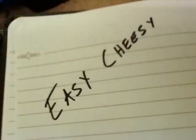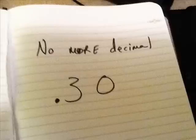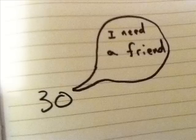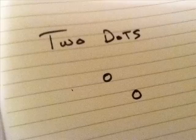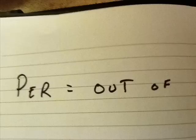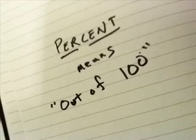It gets even easier — decimal to percent. Go ahead, drop the decimal; the decimal is the biggest hint. Now your new number is lonely, just give him a sign. His friend has two dots and an in-between line. Now per means out of, and cent means hundred. When I say percent, you say out of a hundred — per cent, out of a hundred.